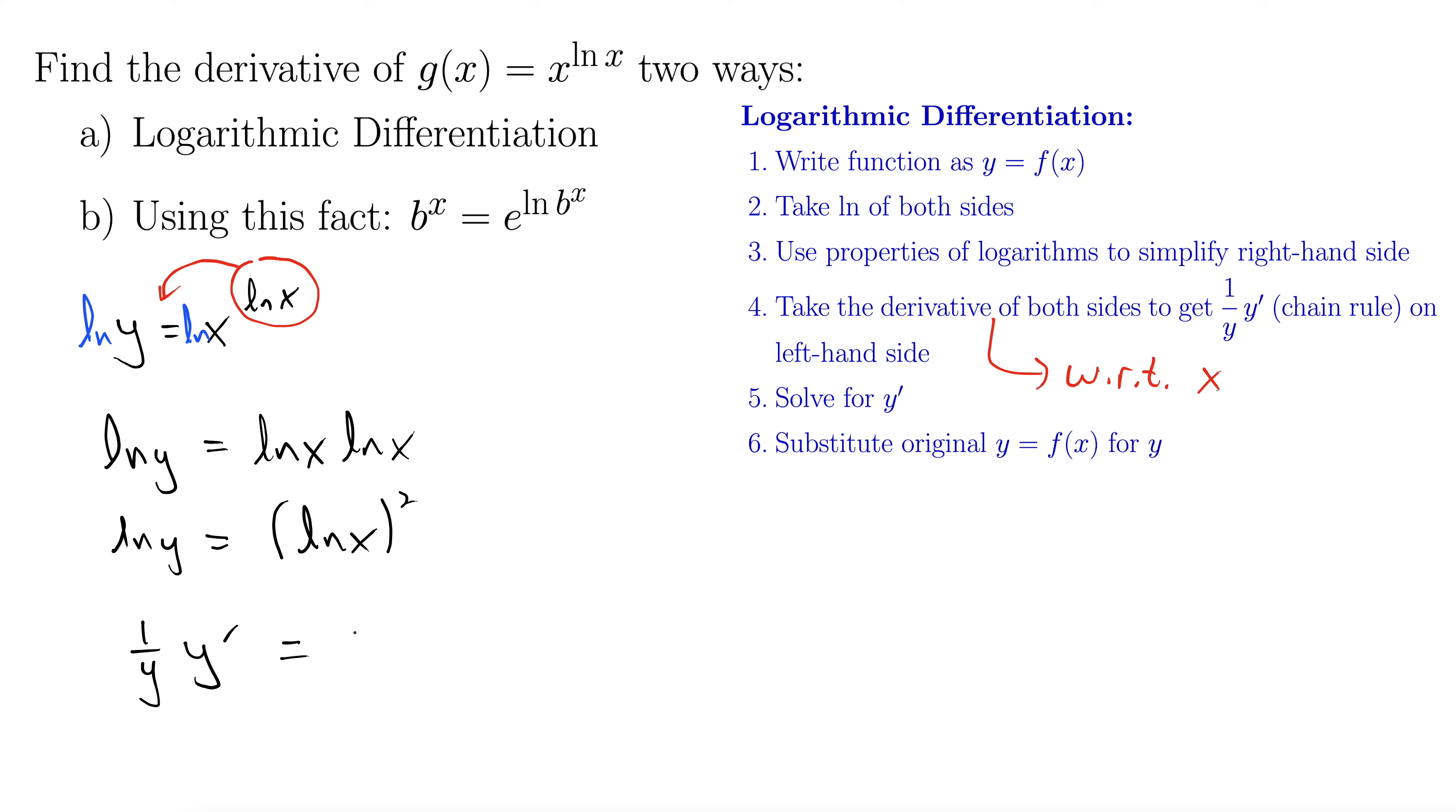On the right-hand side, we have the chain rule again. We do the outside to natural log x times the derivative of the inside, one over x. Step five, solve for y prime, so let's go up here with it.